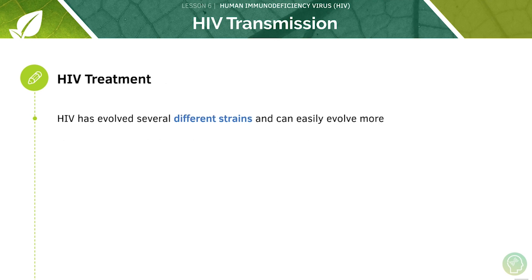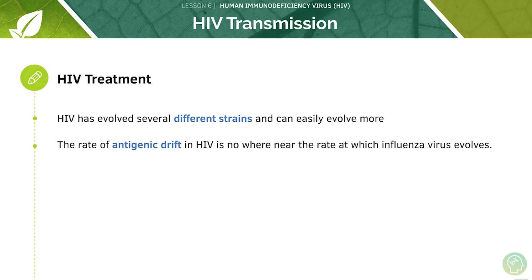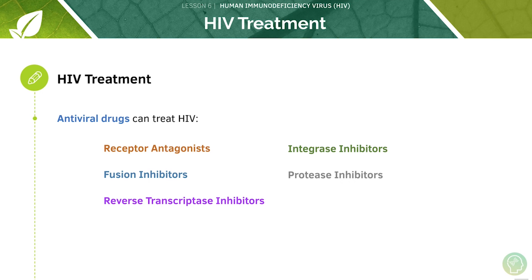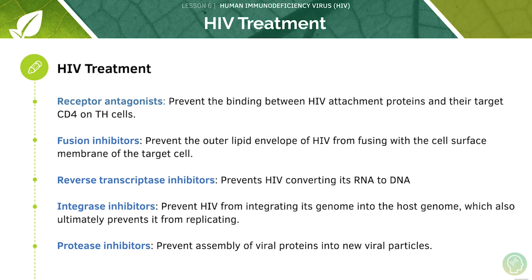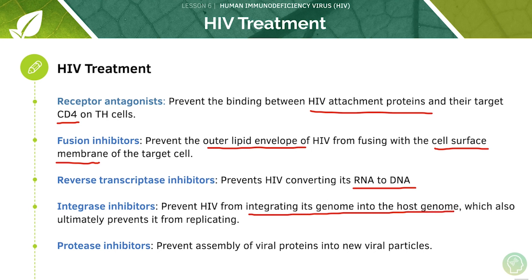Like the influenza virus, the treatment of HIV is complex and evolving, though the rate of antigenic drift is nowhere near the rate at which the influenza virus evolves. Antiviral drugs can treat HIV: receptor antagonists prevent binding between the HIV attachment proteins and the target CD4 receptor; fusion inhibitors prevent the outer lipid envelope from fusing with the cell surface membrane; reverse transcriptase inhibitors prevent HIV from converting RNA into DNA; integrase inhibitors prevent HIV from integrating its genome into the host genome; and protease inhibitors prevent the assembly of viral proteins into new viral particles.